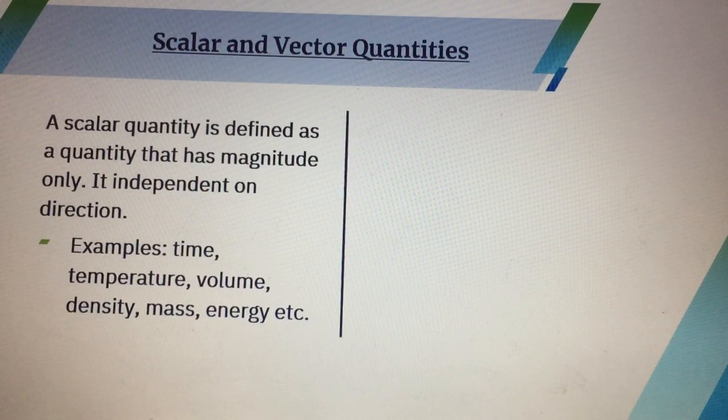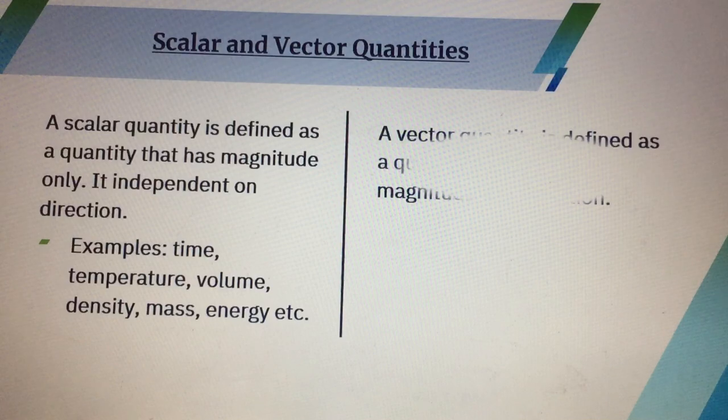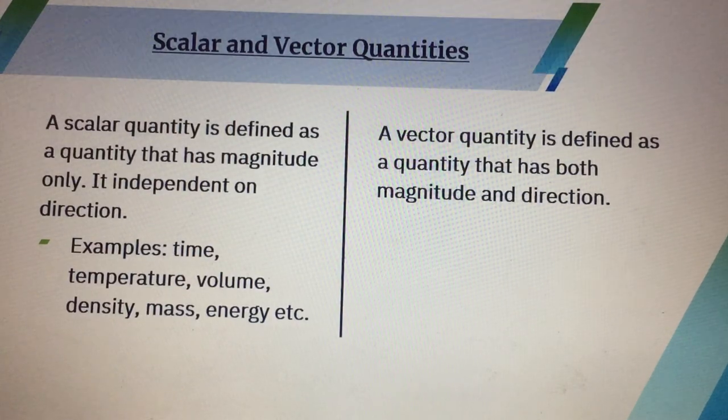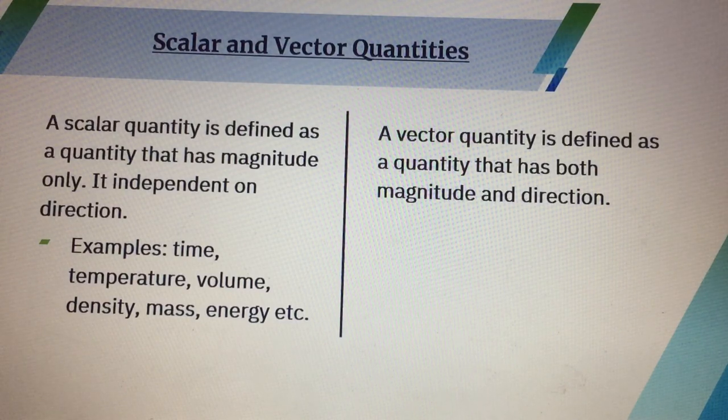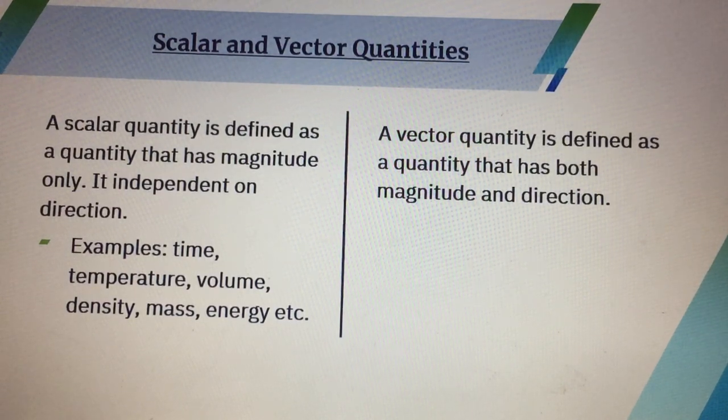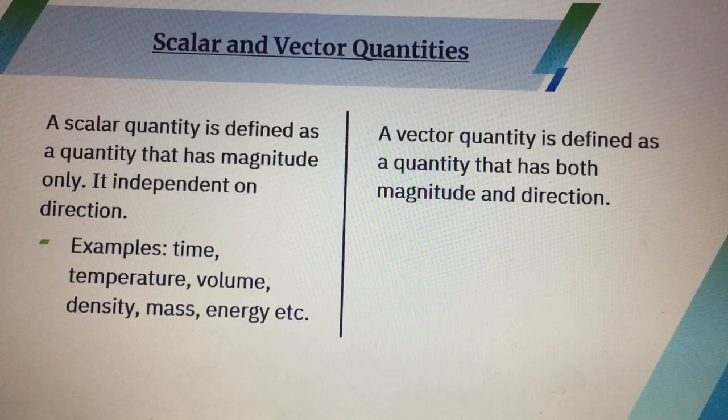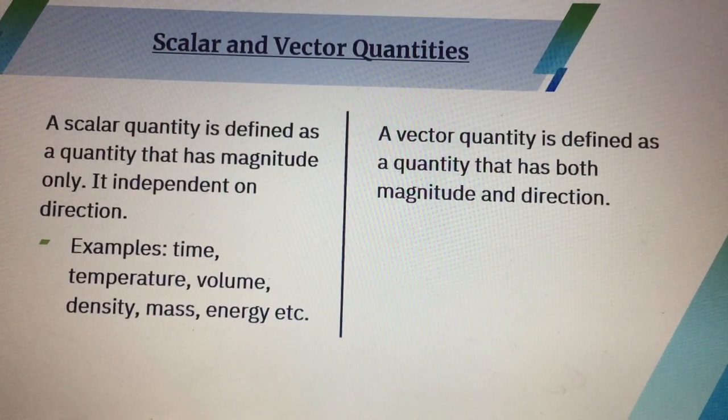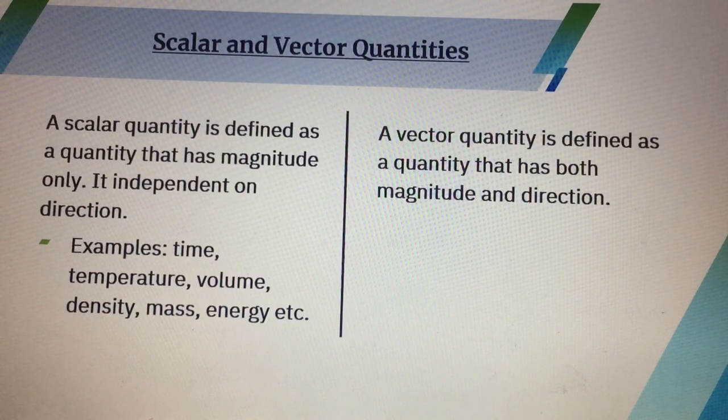Now what are Vector Quantities? In Vector Quantities, it needs to mention magnitude and direction both. A vector quantity is defined as a quantity that has both magnitude and direction.